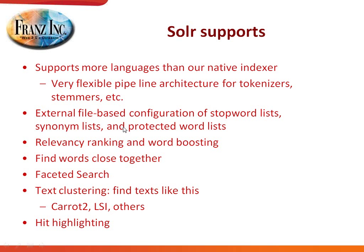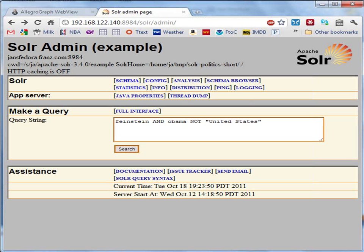Many people now want to search for synonyms of words — Solr supports that. You can have synonym lists so that when you search for word A, you will get synonym B too. You can do relevancy rankings, weighting certain words more important. There's a feature I like: find words close together — so you can say find the word party and weekend within 10 words. You can do faceted search, apply text clustering algorithms, and more. So Solr really has a full set of wonderful features.